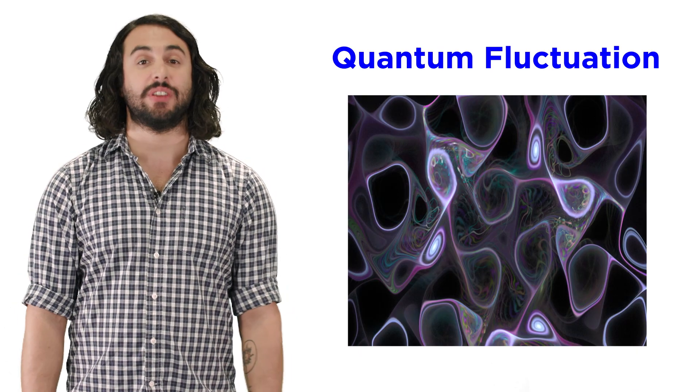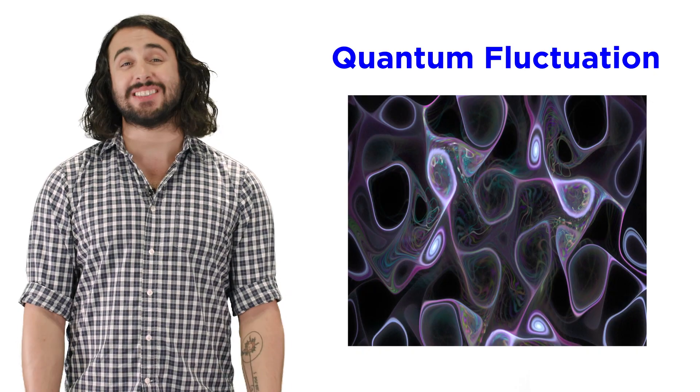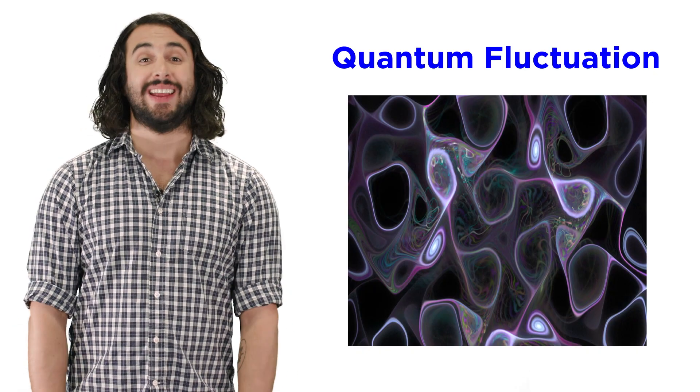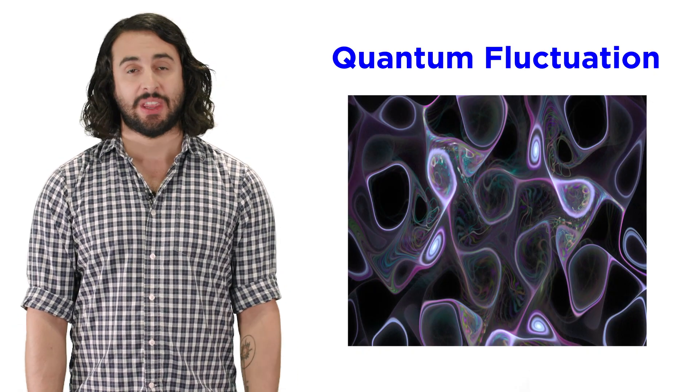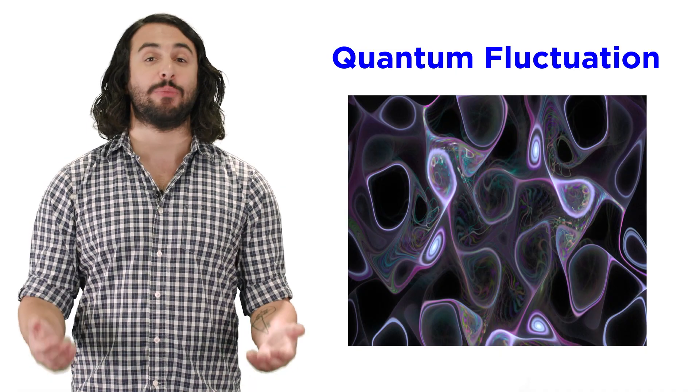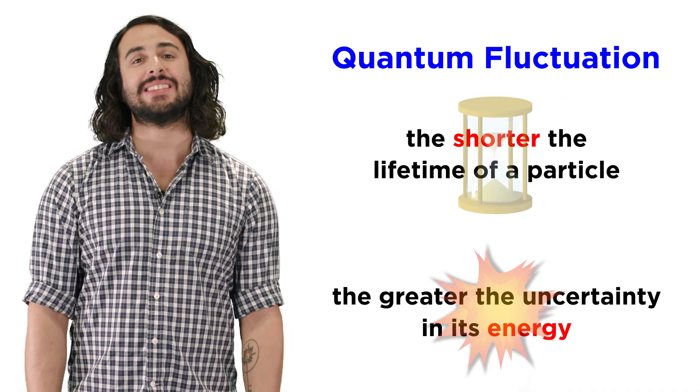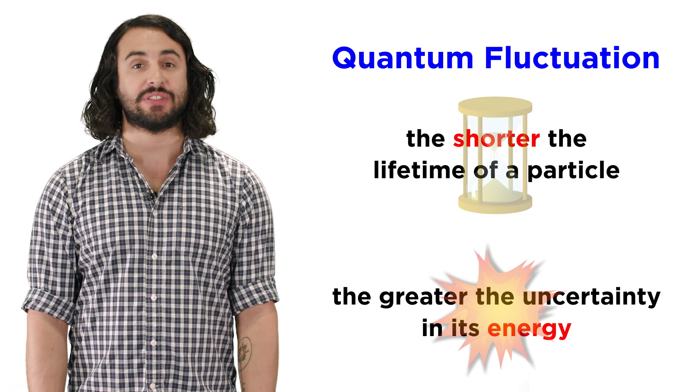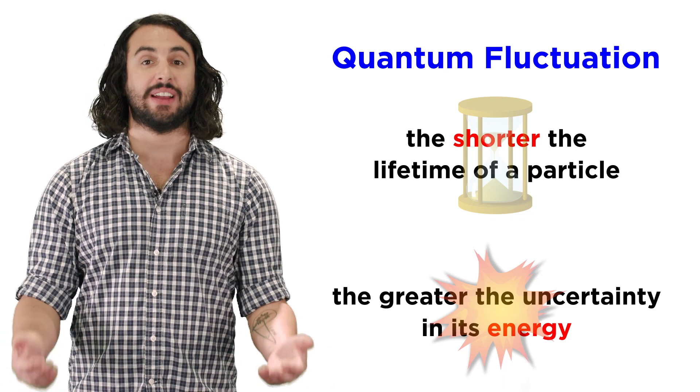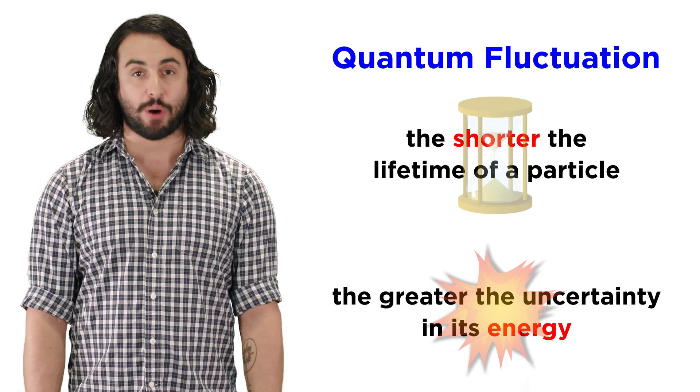An immediate ramification of this concept brings us possibly the hardest pill to swallow in all of modern physics, the idea of quantum fluctuation. Since it is the case that the shorter the lifetime of a particle, the greater the uncertainty in the energy of the particle,